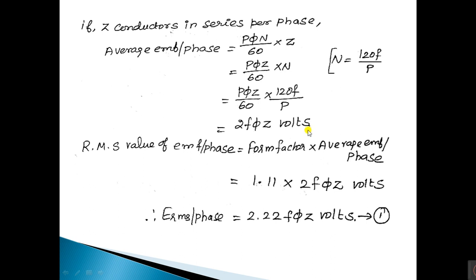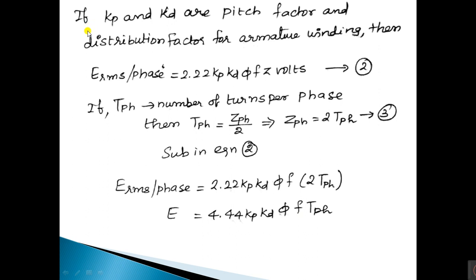We need the RMS value of EMF per phase. RMS = form factor × average EMF. The form factor is 1.11, and average EMF per phase is 2fφz volts. Multiplying gives E_rms per phase = 2.22fφz volts. Considering the pitch factor kp and distribution factor kd in the armature winding, E_rms per phase = 2.22·kp·kd·φ·f·z volts.